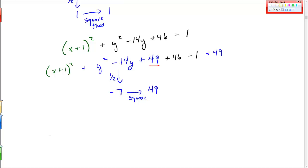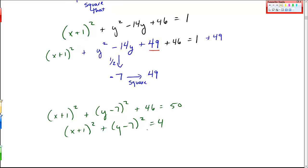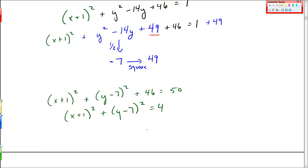And now I'm going to factor. So, I have (x+1)^2 + and I factor this trinomial, which is in blue, (y-7)^2. I still have a +46 and equal to 50 on the other side. And if I move the 46 to the other side, I should get (x+1)^2 + (y-7)^2 = 4.